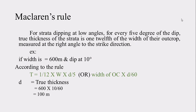An example: the width of the outcrop is 600 meters and the dip of the formation is 10 degrees. Since this rule applies to low dipping angles, 10 degrees is considered. Applying the rule: T = (1/12) × W × (D/5), where W is the width of the outcrop and D is the dip. So true thickness = 600 × 10 / 60 = 100 meters. Just by knowing the width and dip, you can calculate the true thickness without using any trigonometry.